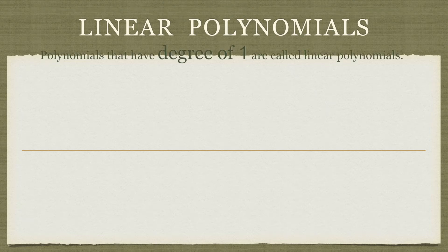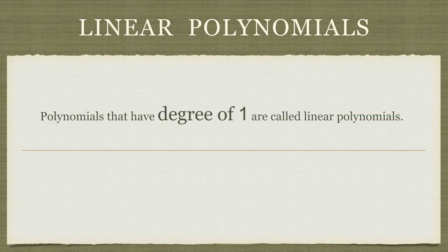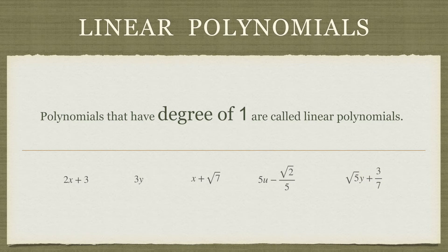What are linear polynomials? Polynomials that have a degree of 1 are called linear polynomials. These are examples of linear polynomials. In each of these cases the variable is raised to the highest power of 1.